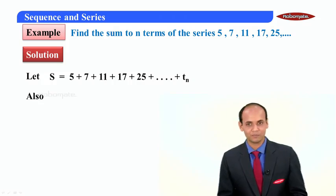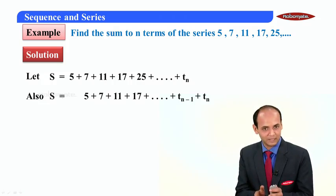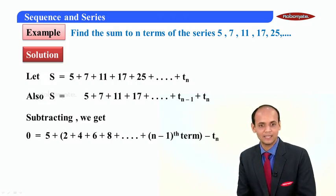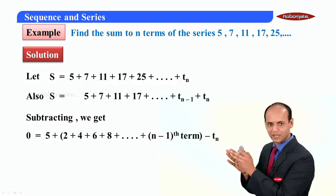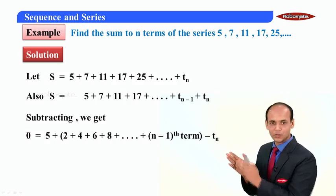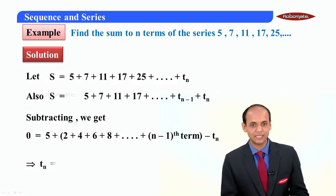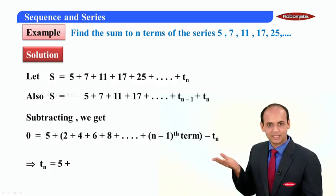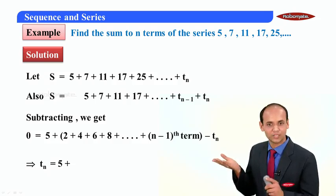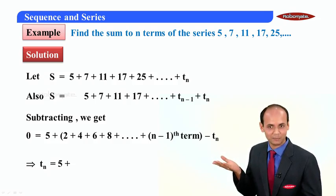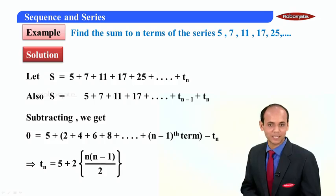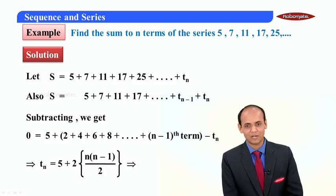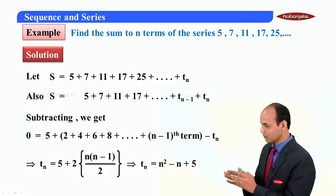Writing the sum S, then rewriting it with terms shifted, and subtracting. On the right-hand side, after subtraction, there are n minus 1 terms: 2, 4, 6, 8, and so on — that is an AP. So tn equals 5 plus the sum of n minus 1 terms of this AP. Applying the formula for the sum of n minus 1 terms of an AP, tn comes out as n squared minus n plus 5.